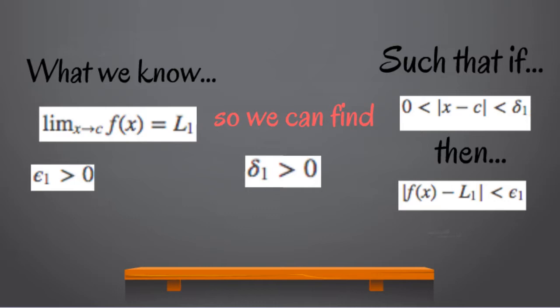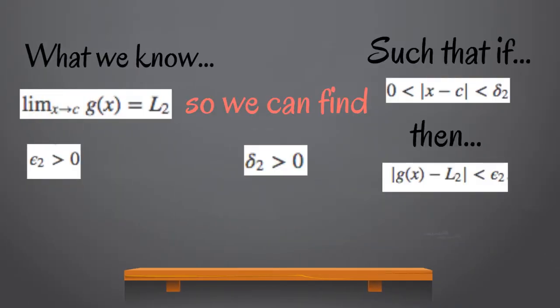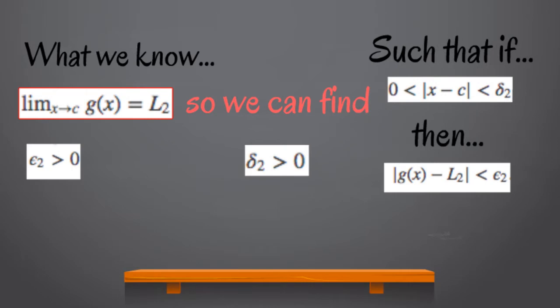We also know that limit x approaching c g(x) equals L2. So, once again, appealing to the epsilon delta definition, only this time in reverse, we also know that for any epsilon_2 > 0, we can find a delta_2 > 0, such that if 0 < |x - c| < delta_2, then |g(x) - L2| < epsilon_2. Consider what happens when we take both epsilon_1 and epsilon_2 to be epsilon over 2.